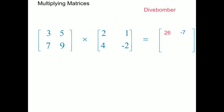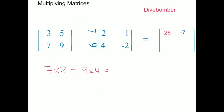Now we're going to do row 2 column 1. The 7 and the 9 come out and dive bomb the 2 and the 4. Just as in the previous example, we get 7 times 2 plus 9 times 4, which is equal to 50. The 50 goes into row 2 column 1 of the answer matrix.